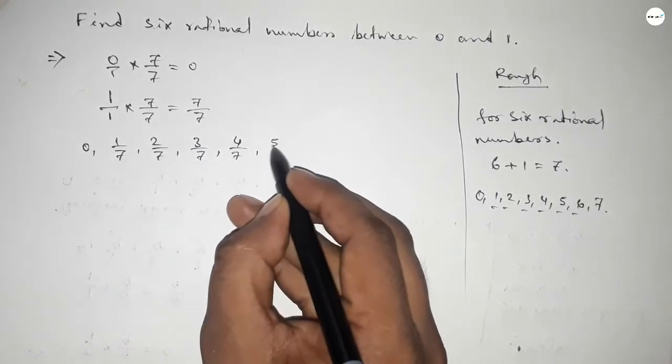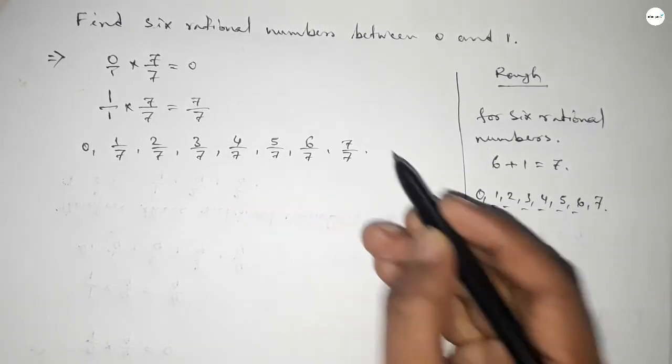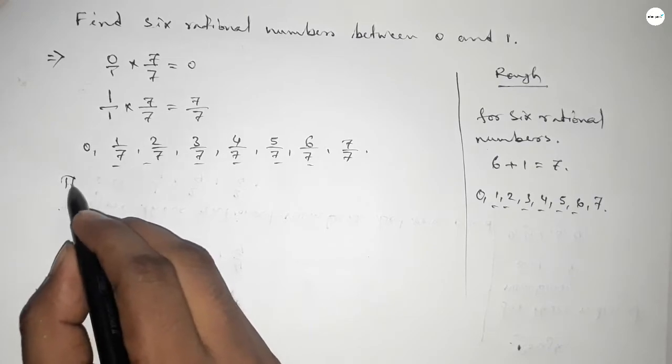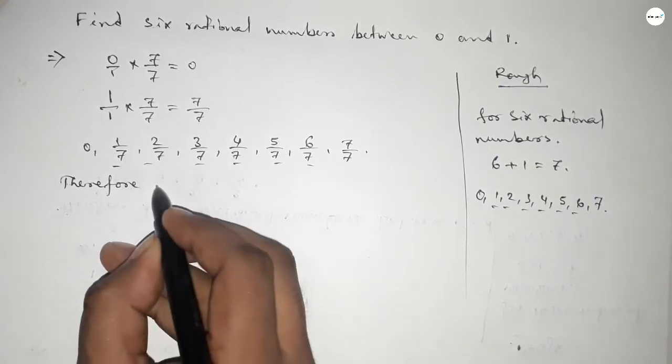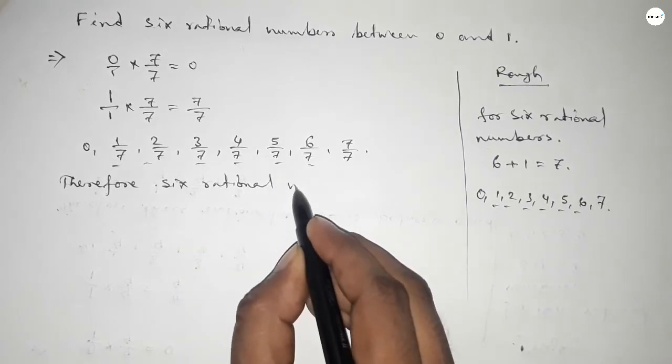Among these, the required six rational numbers between 0 and 1 are the ones excluding the endpoints.